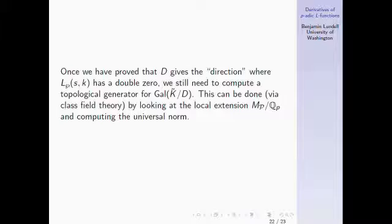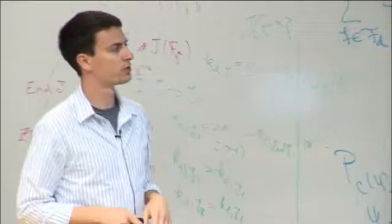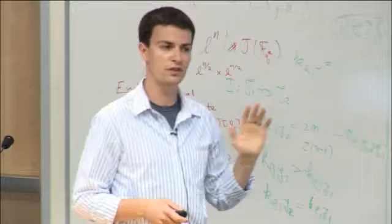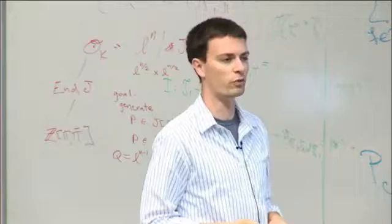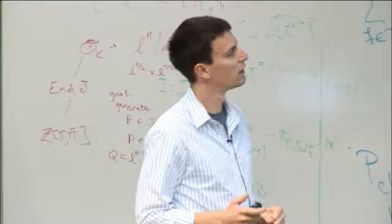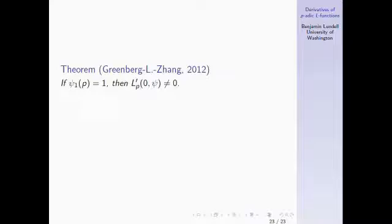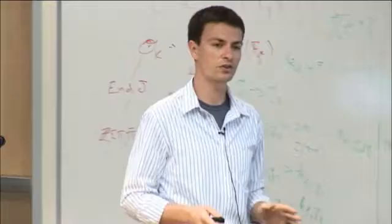Once I have this double zero, I still need to calculate a topological generator for this Galois group, so I can compute the line and its coefficients. This can be done via local class field theory: you look at the Artin map, fiddle around with it for a page, and you have what the topological generator needs to be. So that does it. We've proved that if ψ₁(p)=1, then the derivative is non-vanishing, using two-variable p-adic L-functions.